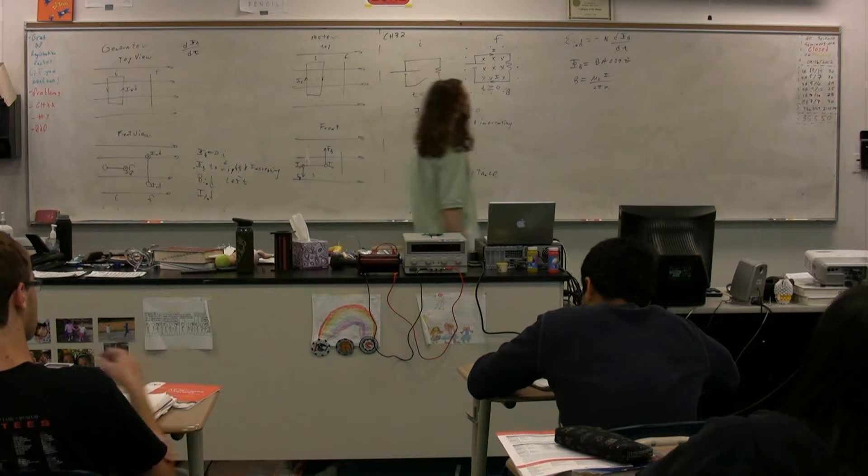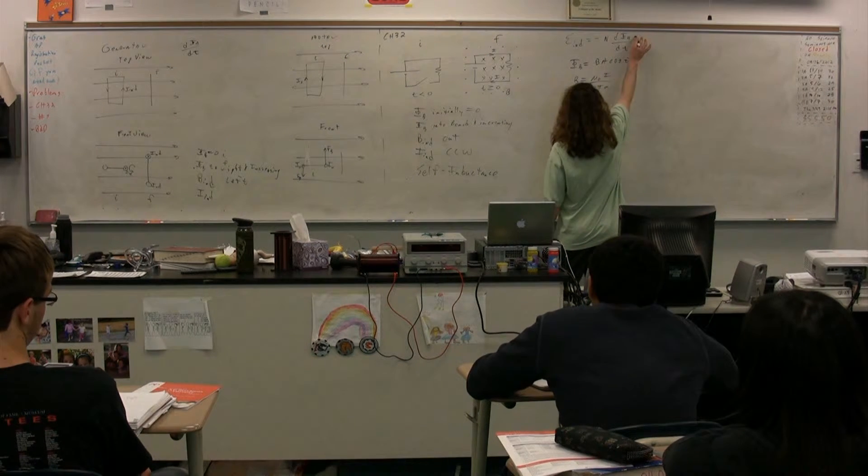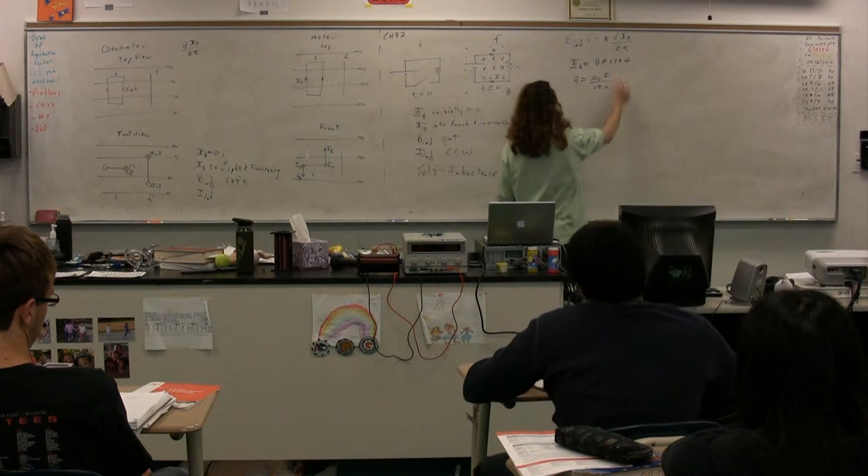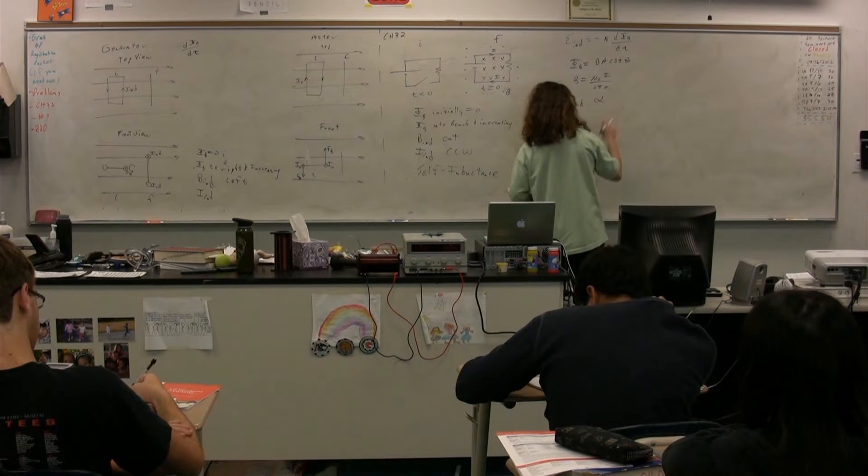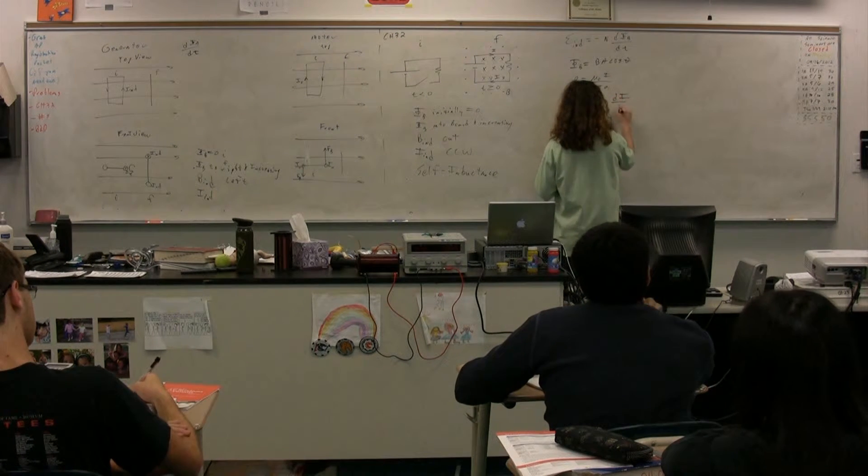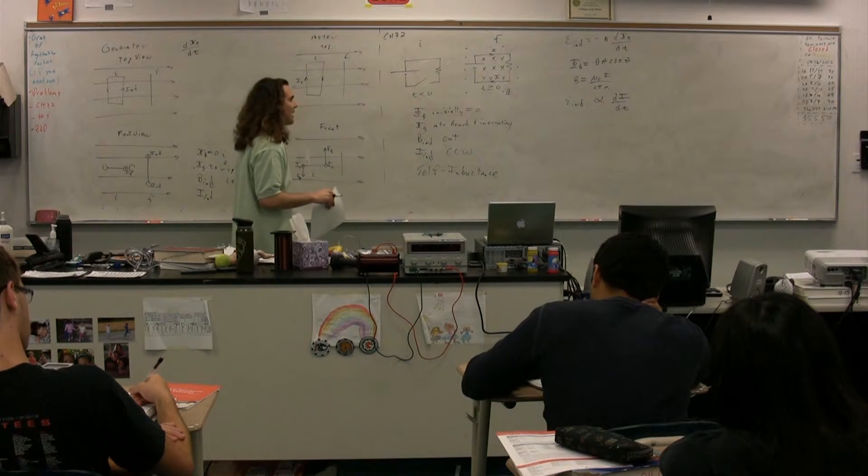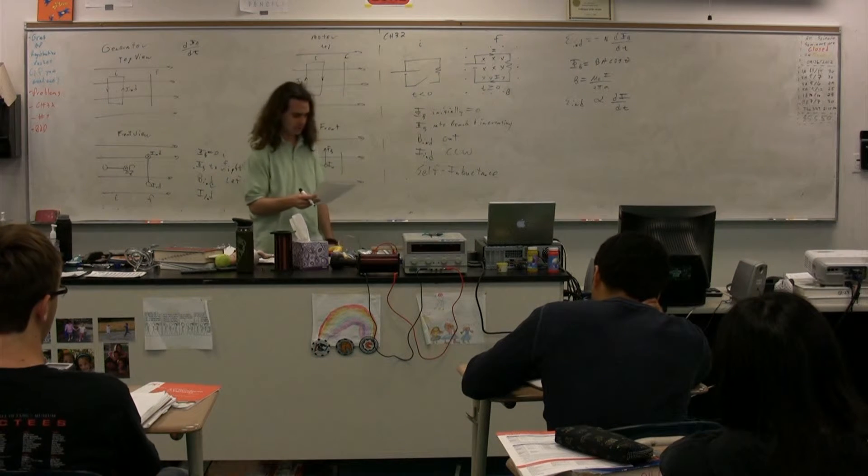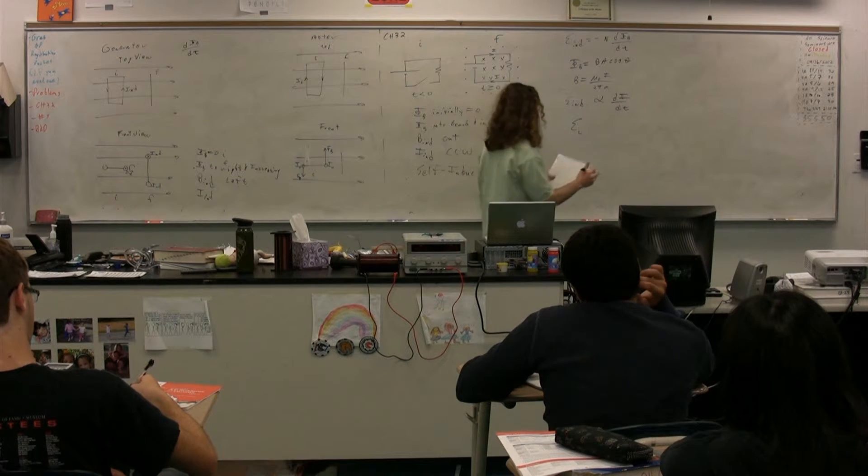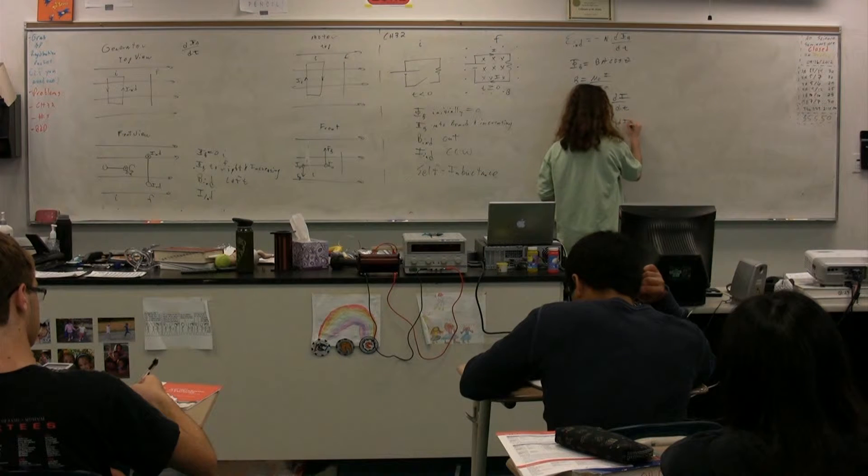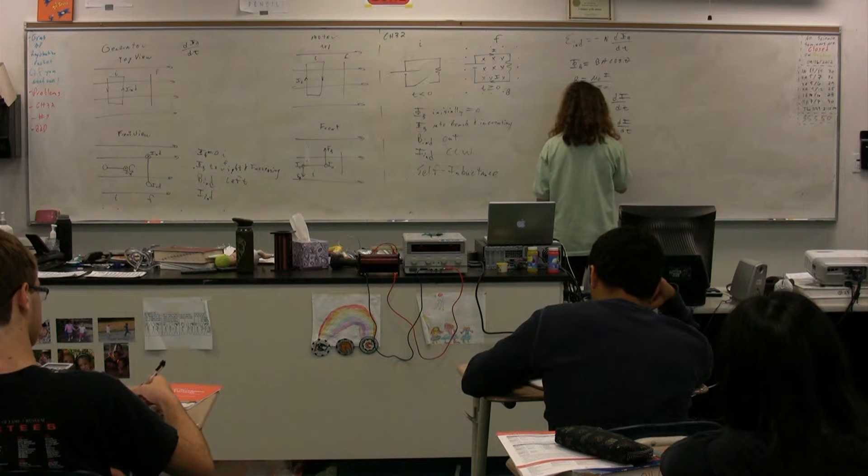Which means that the self-induced EMF is proportional to the derivative of the flux, but that's proportional to the change in the current. In other words, the induced EMF is proportional to how the current is changing. Because it's how the current is changing that causes the magnetic field to change, which causes the flux to change. And the way it looks is this. The EMF, the self-induced EMF is equal to negative L times di dt, where L is the inductance.